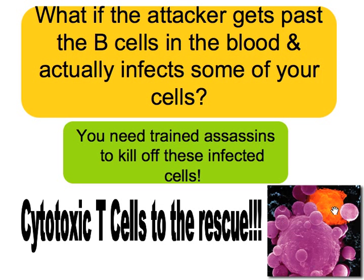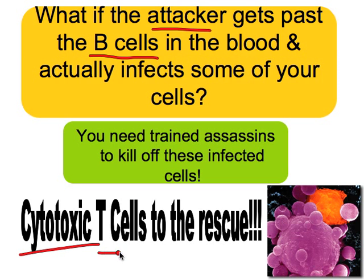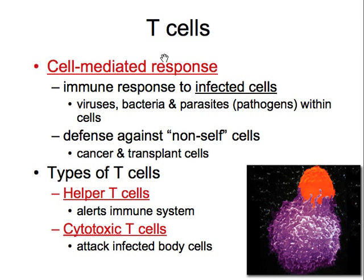What if the attacker gets past all those B-cells? Remember, it's the job of the B-cells to take care of pathogens. So what if one of those attackers gets past the B-cells? We need highly trained assassins to kill off these infected cells, and we have our cytotoxic T-cells to the rescue. T-cells are part of our cell-mediated response — they take care of our infected cells, so it doesn't matter what pathogen it is; if it infects a cell, our T-cells go to work.